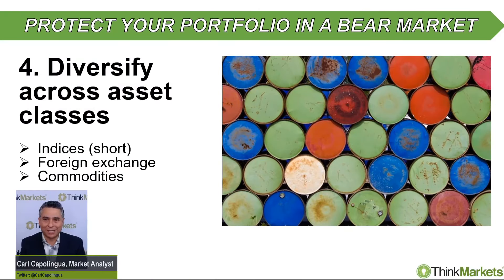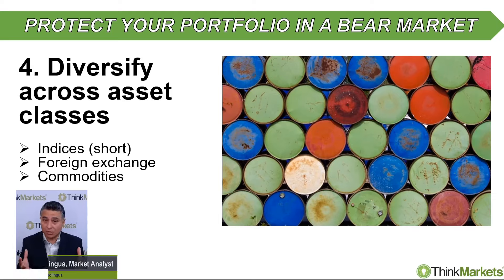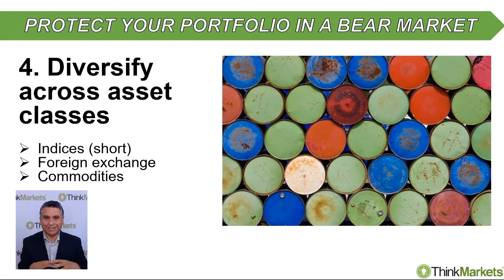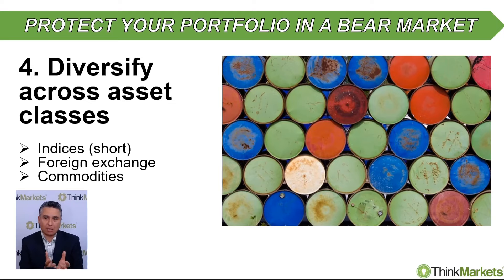The fourth and final point on how to protect your portfolio in a bear market is to diversify across asset classes. You can use indices — typically, if your portfolio is going down, it's because indices are going down. Think about shorting those indices to make a profit there, or to hedge out your portfolio.